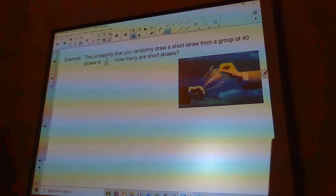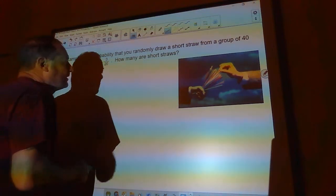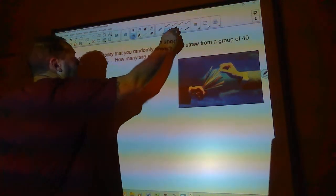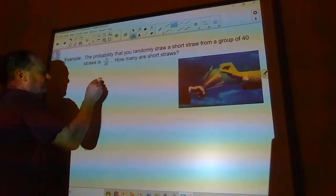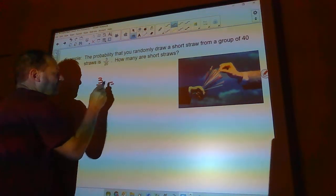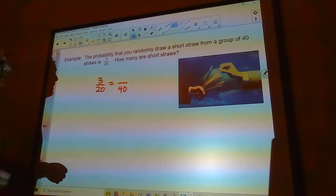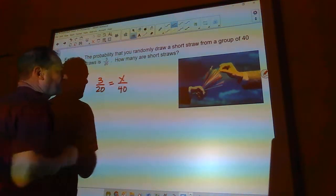The probability that you randomly draw a short straw from a group of 40 straws is three in 20. How many short straws are there? So this is just a proportion. I know the probability is three in 20, and I know that there's 40 straws. So I want to know how many short straws there are. That's going to go right there.